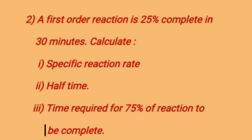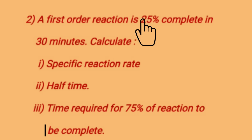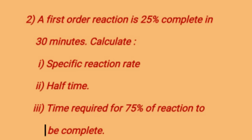A first order reaction is 25% complete in 30 minutes. Since percentage is given, we consider initial concentration of reactant as 100. 25% of reaction is complete means formation of product is 25, so a minus x equals 100 minus 25 equals 75. We have to calculate the rate constant k, half-time, and time required for 75% of reaction to be completed, where a minus x equals 100 minus 75 equals 25.